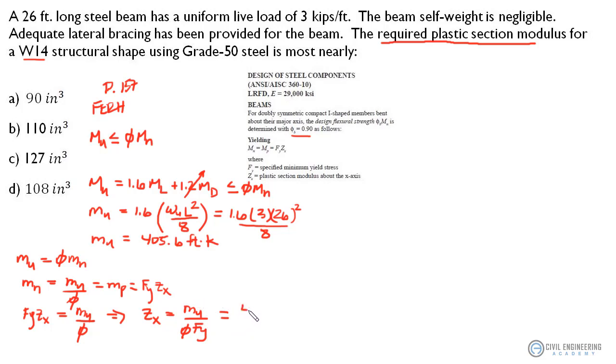We've determined that this is 405.6 and I won't carry all the units here. We know that our phi factor, our resistance factor, is 0.9 and we've been given our yield strength on our steel from the problem definition. And since we're dealing with kips here, I'm just going to keep this in terms of kips so it's 50,000, it's actually KSI for the units there. Punch that into our calculators and we come up with 108 inches cubed.